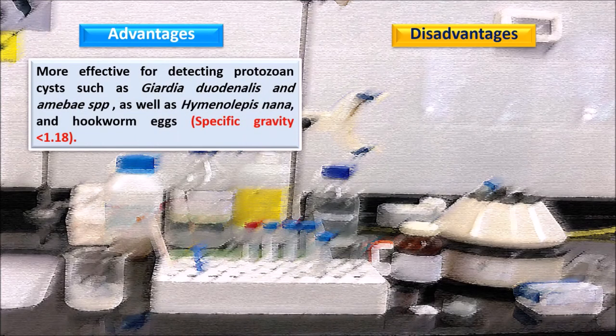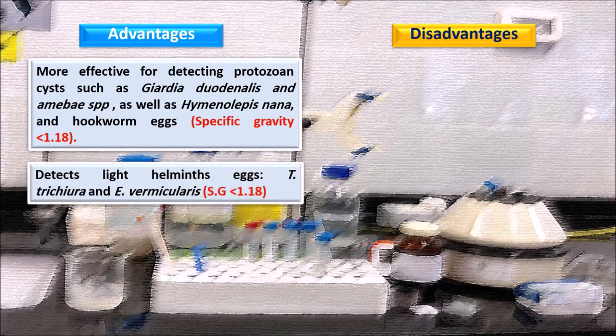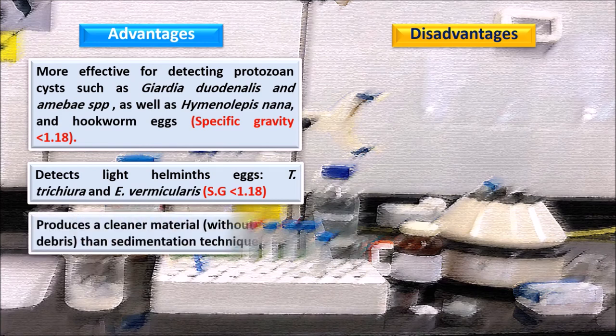Advantages: More effective for detecting protozoan cysts such as Giardia duodenalis and amoeba species, as well as Hymenolepis nana and hookworm eggs with a specific gravity of less than 1.18. Also detects light helminth eggs such as Trichuris and Enterobius vermicularis with a specific gravity less than 1.18. Produces cleaner material than the sedimentation technique.